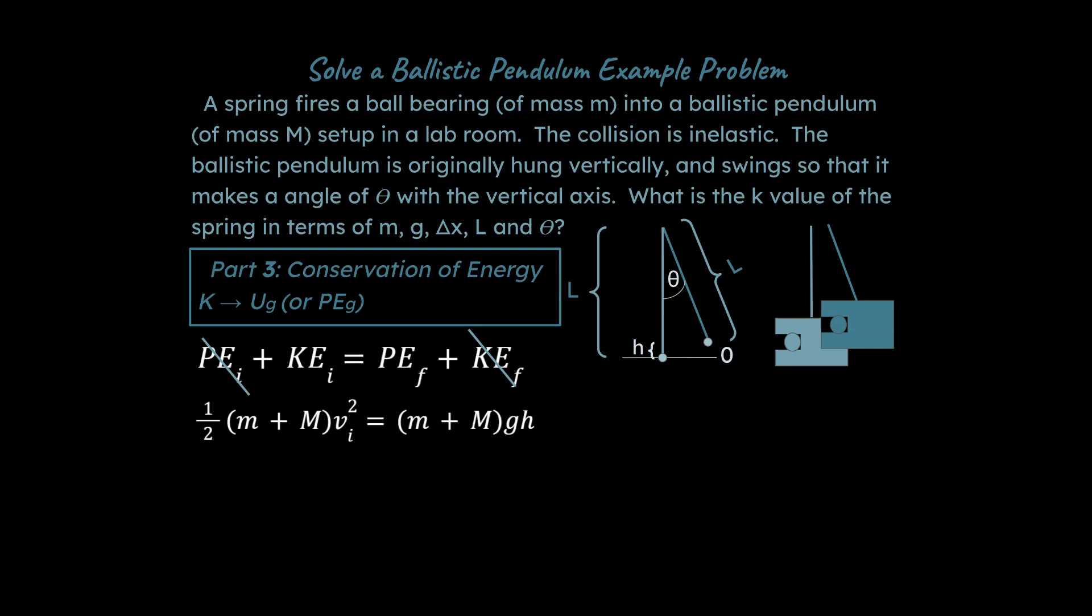So at this point, what could we do to simplify the problem? Well we could divide out the masses, so we're going to go ahead and do that and think to ourselves, what do we not know? Well we don't know what the speed is.